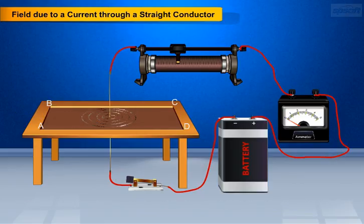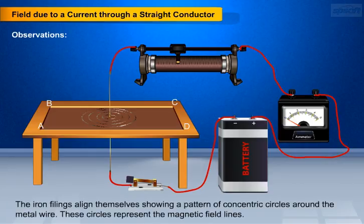Now let us list out the findings for the test. We observe iron filings align themselves showing a pattern of concentric circles around the copper wire. These circles represent the magnetic field lines.